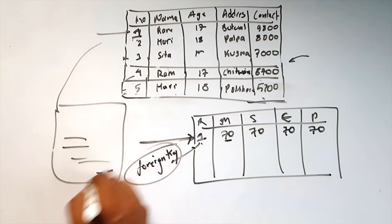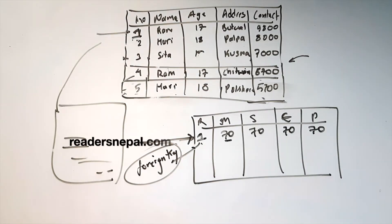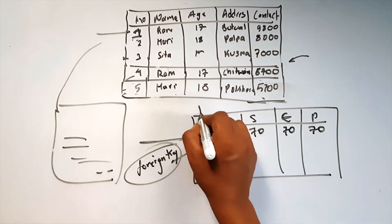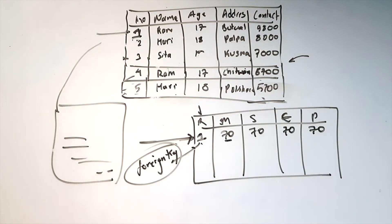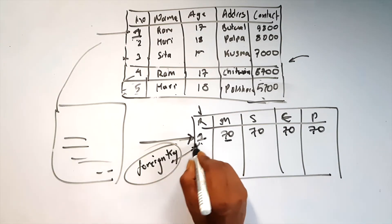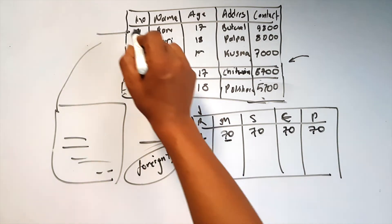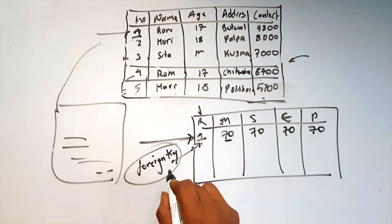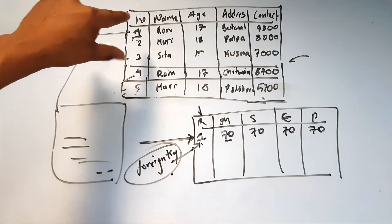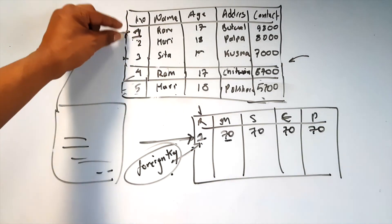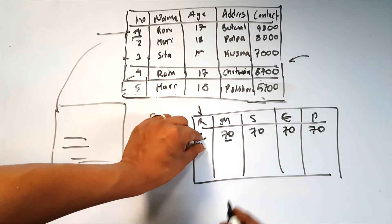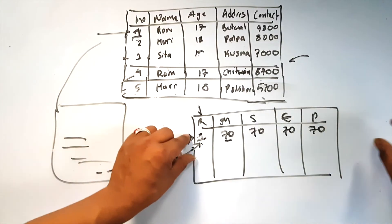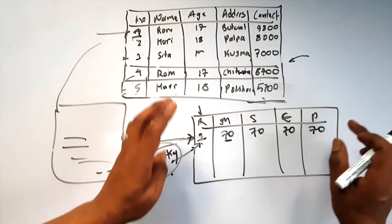What is a foreign key? It is a field — it is the key whose value matches with the primary key in another table. Whose value matches with the primary key of another table — that is a foreign key.